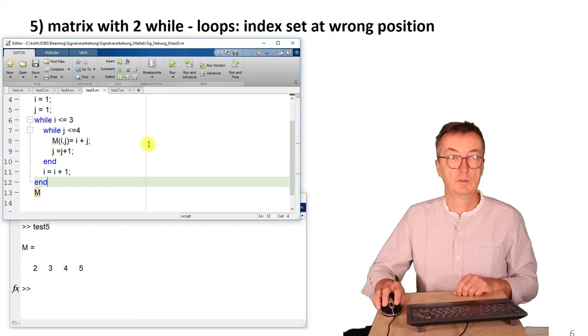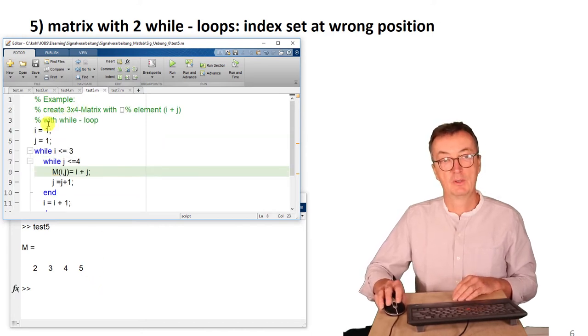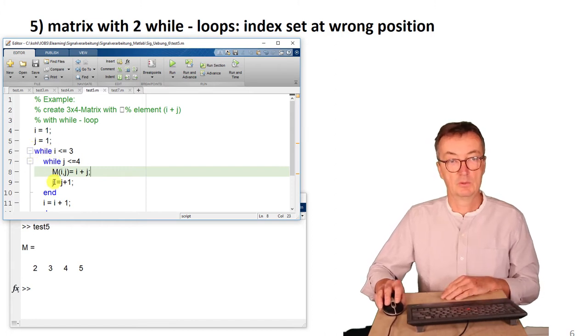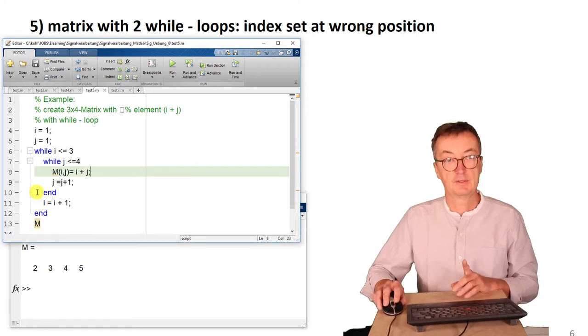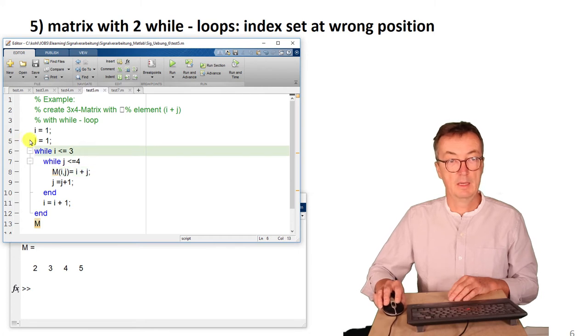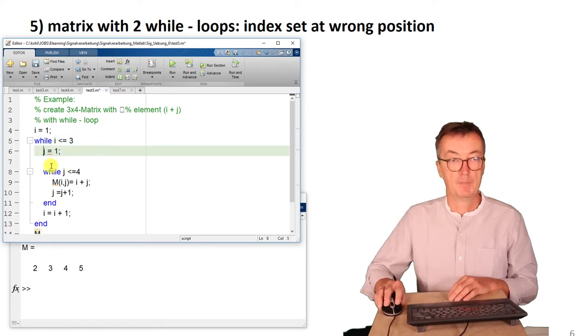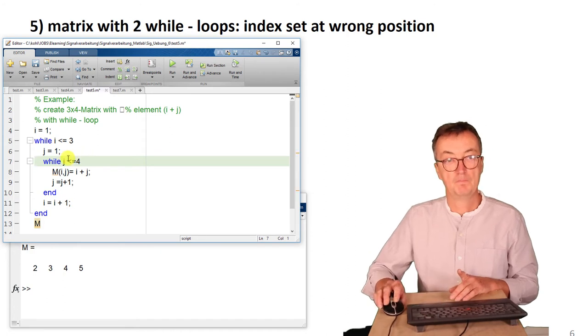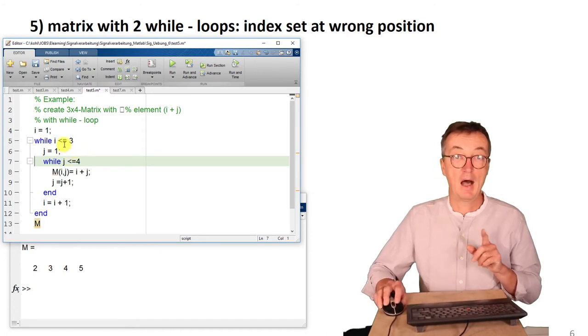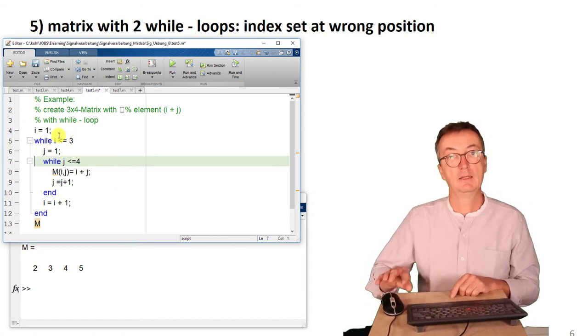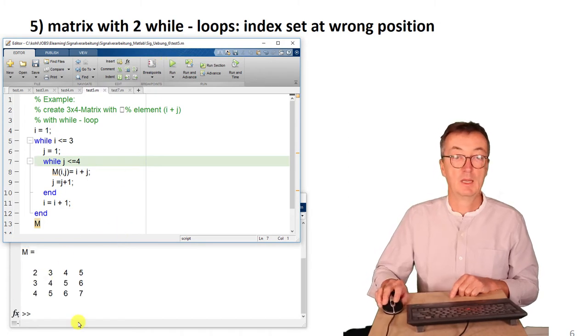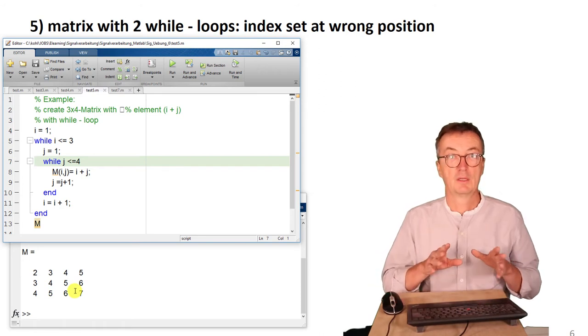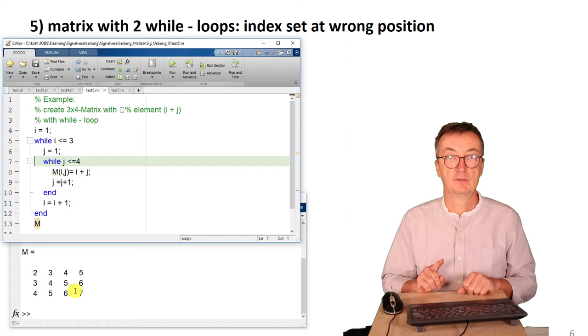That's not what we wanted to get. We would like to see a matrix. And that's why we installed two while-loops. The problem is that the index is set in a wrong way. The j equals 1 needs to be shifted here. That is, whenever the i gets a new value, the j needs to start at 1 again. And just changing this little thing, we get a matrix.